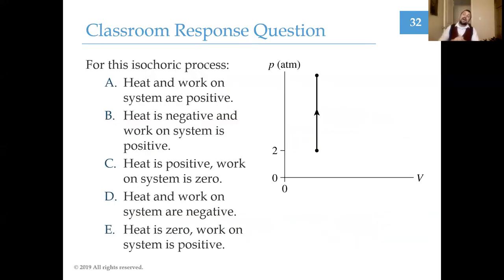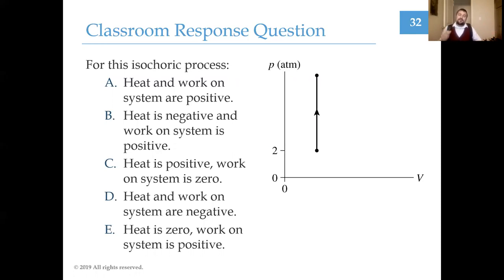Let's try an isochoric process: I increase pressure at constant volume. What is happening to heat and work? The work done on the gas is the area under the curve — but there is no curve, there's a vertical line with no area. So the work done on the gas is zero. But I'm increasing the pressure at constant volume, so the only way to increase the pressure without doing work is to add heat into the system.